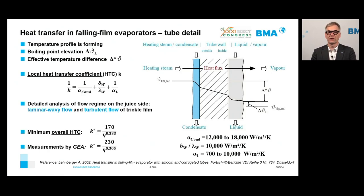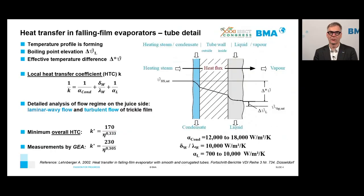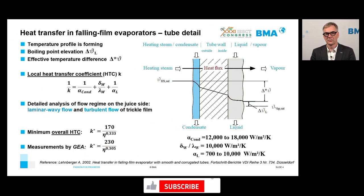From this analysis we can determine values and dependencies of the heat transfer coefficient. The minimum overall heat transfer coefficient — from the top to the bottom of the tube — depends on viscosity. The formula is: K = 170 / (eta^0.333), where eta is viscosity. The company GEA made measurements on a falling film tube and arrived at a very similar formula with nearly the same viscosity exponent.